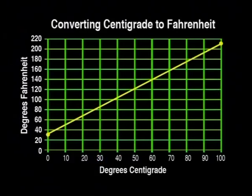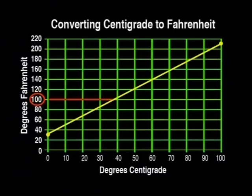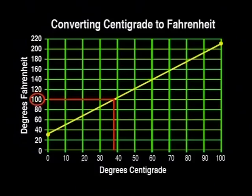Now let's work out what 100 degrees Fahrenheit is in centigrade. We go across from 100 to the line, then down to a tiny bit less than 38. So 100 degrees Fahrenheit is nearly 38 degrees centigrade.